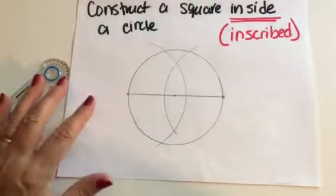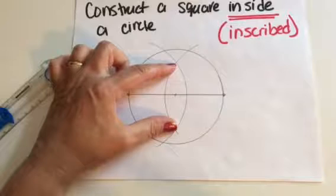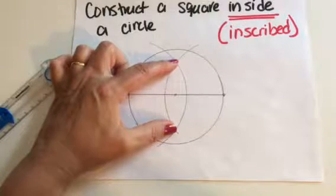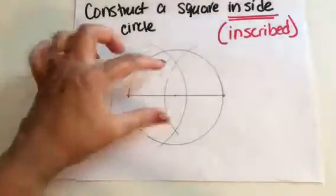Now students often ask me, well what happens if this part of my construction is bigger than yours, or smaller than yours? And the answer is it really doesn't matter, because this point and this point are still going to line up with the center of your circle.